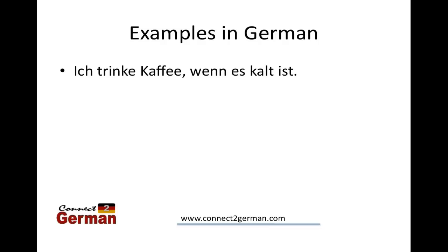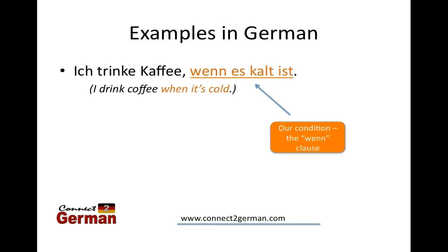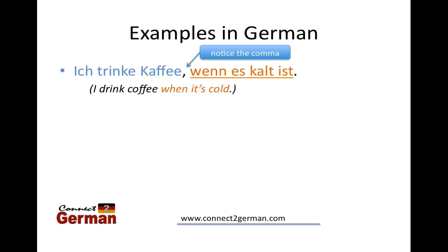So let's take a look at some examples. Ich trinke Kaffee, wenn es kalt ist. And this is: I drink coffee when it's cold. Our condition, or our WENN clause, is 'wenn es kalt ist' — when it's cold. And 'Ich trinke Kaffee' — I drink coffee — is what is done. Note that the comma is there in the middle.